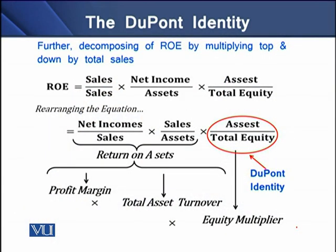This is the simple decomposition of return on equity. When we combine the first two expressions — net income over sales, and sales over assets — we can find return on assets. And when we multiply this by the third expression, the equity multiplier, we get the resulting return on equity.